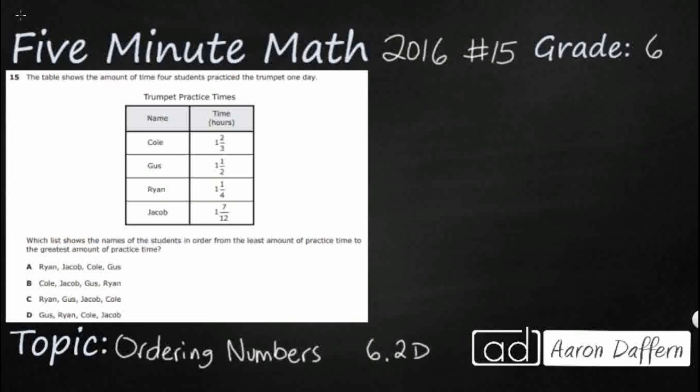So we have a simple table of how long each student practiced the trumpet. It's all one hour and then a fraction, and then we need to find least to greatest. So we are just putting these in order, but we cannot compare these fractions as they are because they each have different denominators.